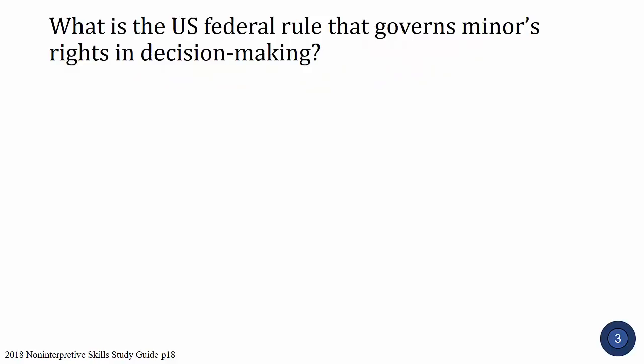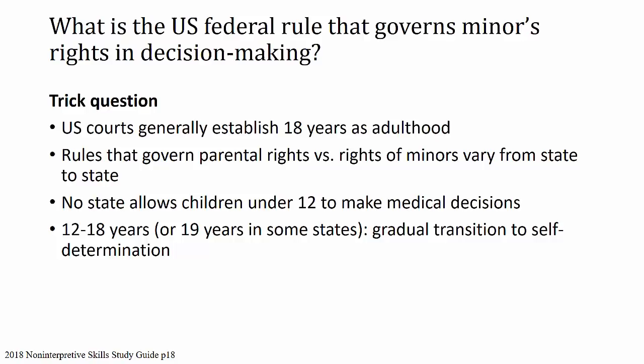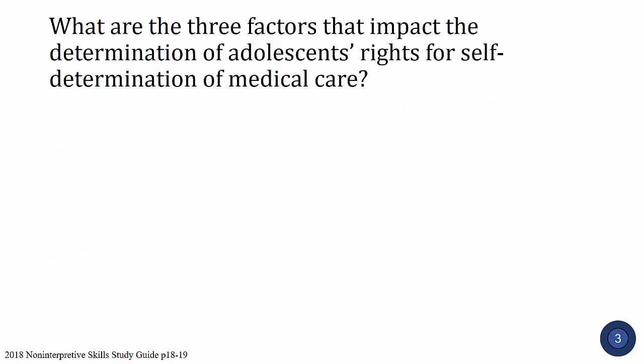Next question: what is the U.S. federal rule that governs a minor's rights in decision-making? This is actually a trick question. U.S. courts generally establish 18 years as adulthood, but the rules governing parental rights versus rights of minors vary from state to state. No state allows children under 12 years of age to make medical decisions for themselves, but between 12 and 18 years — and in some states 19 years — it's a gradual transition to self-determination.